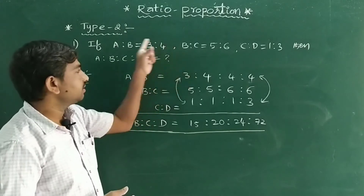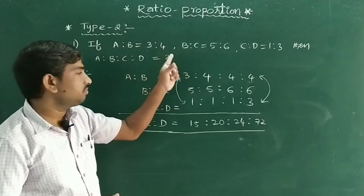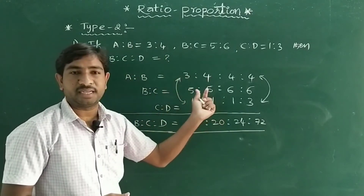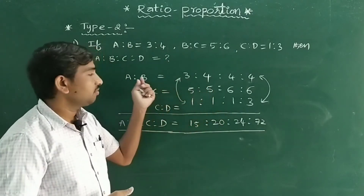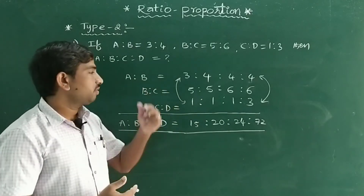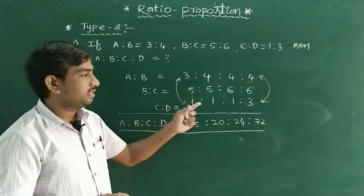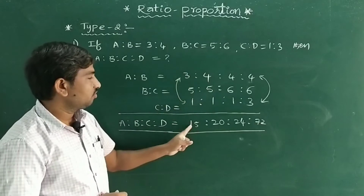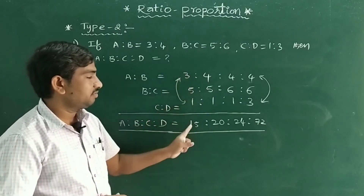So for problems where A:B, B:C, and C:D are given and we need A:B:C:D, this second method is better. The first method is more difficult for four terms. This method is much easier.